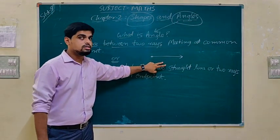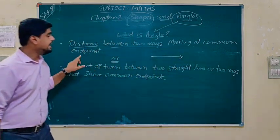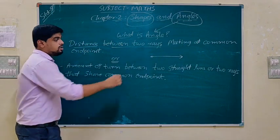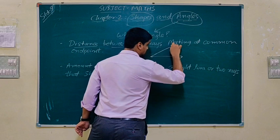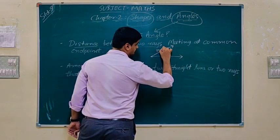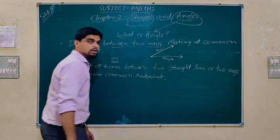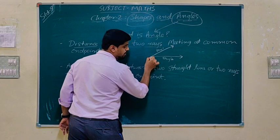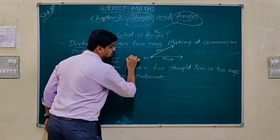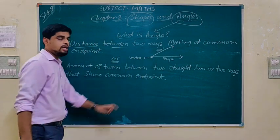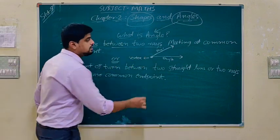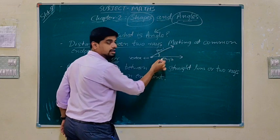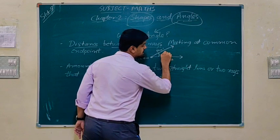We need to draw two rays, but they must meet at one end point. So a ray has only one end point. If I draw another ray — a second ray — like this, these are the two rays: ray one and ray two. Both rays have a common end point, and this common end point is known as a vertex. The distance between ray one and ray two is known as an angle.